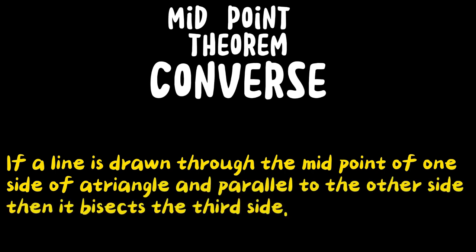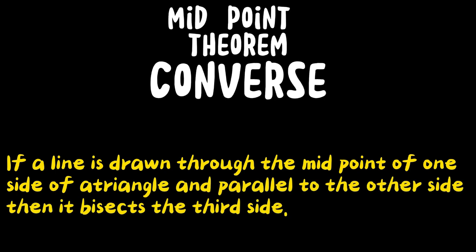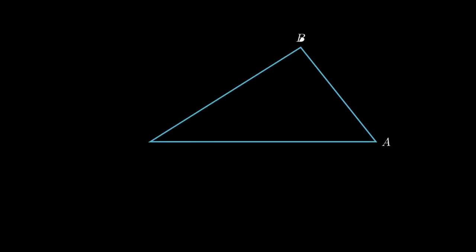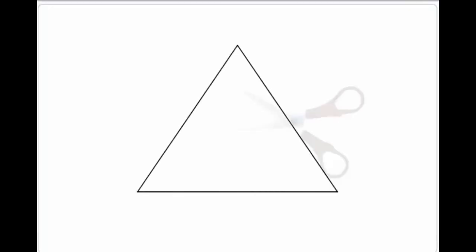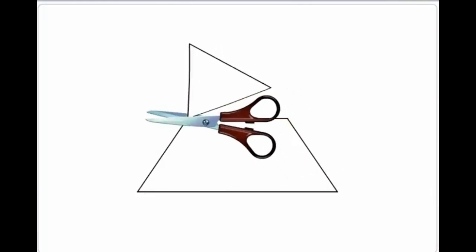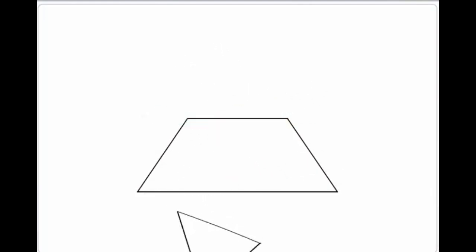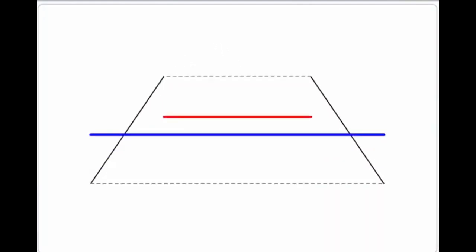The line drawn through the midpoint of one side of a triangle, parallel to another side, bisects the third side.